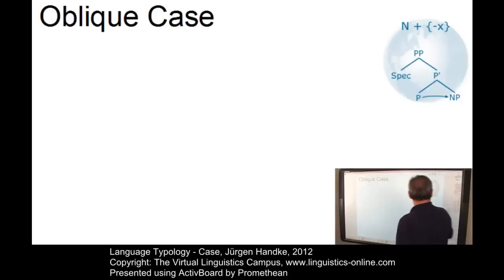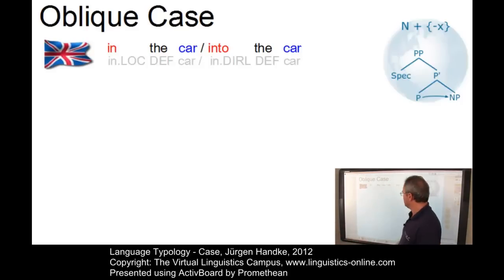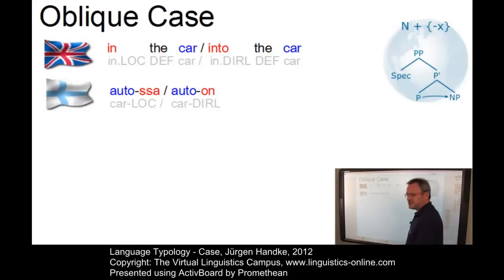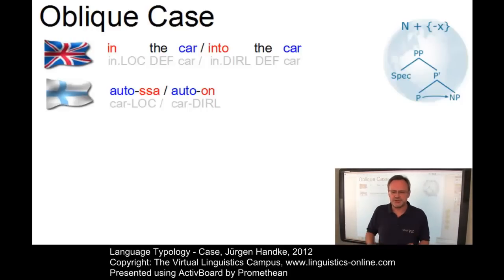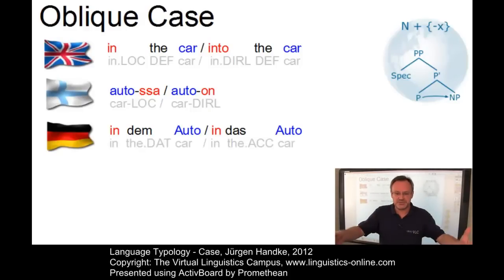Here are two examples from present-day English: 'in the car' versus 'into the car'. The difference is between a location and a direction, expressed via specific prepositions. This can be contrasted with Finnish, where case endings do the same thing: autosa versus auton. And then we have split systems. In German, this semantic relationship is expressed via a preposition, but the preposition is identical for both semantic relations.